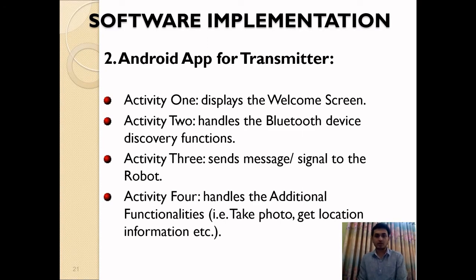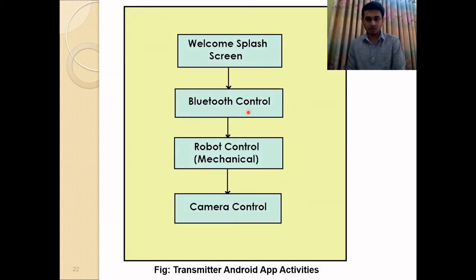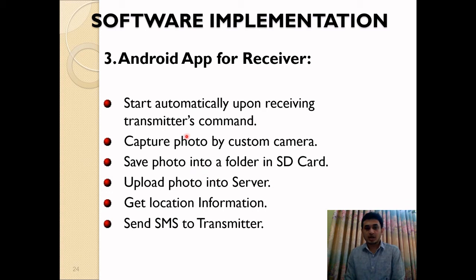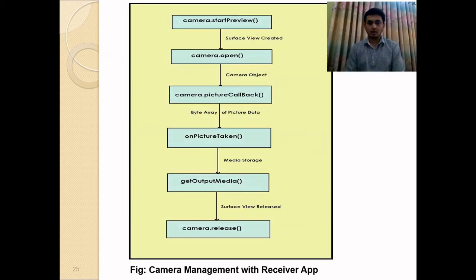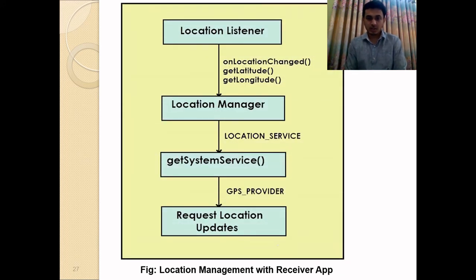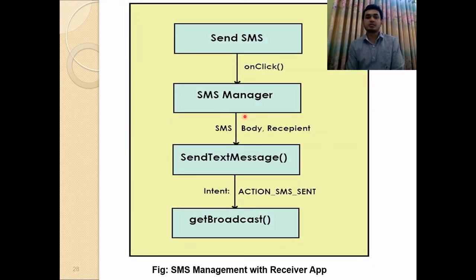There are four activity windows designed for the Android app at the transmitting end: welcome screen, Bluetooth control window, robot control window, and camera control unit. The transmitter Android app uses the Bluetooth API for connection, which calls the Bluetooth adapter to open a Bluetooth socket. The Android app at the receiving end starts automatically upon receiving the transmitter's command. The camera API opens surface view and calls the picture callback method to take a picture and write to media storage. The server upload manager calls open URL connection to write bytes into the buffer. The location API calls the location manager class to get location service longitude and latitude. The SMS API calls the SMS manager class to generate an SMS body and uses implicit intent to send SMS to the transmitter end.